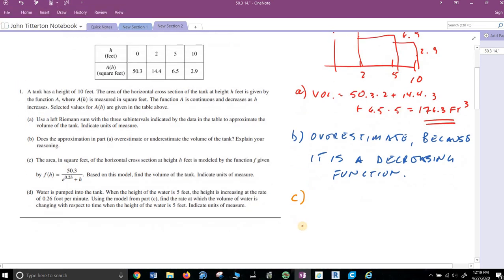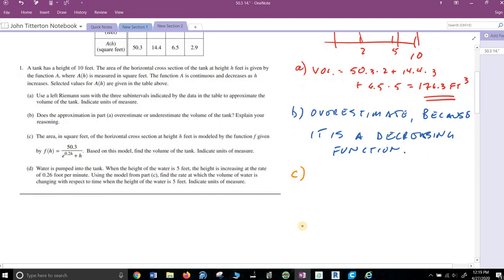All right, part c. Good example, they do this a lot on the AP where they suddenly decide to completely change up the problem. This is a calculator problem. The volume is just a very simple integral from 0 to 10 of e to the 0.2h plus h dh. Put that in your calculator and you should get 101.325 cubic feet.